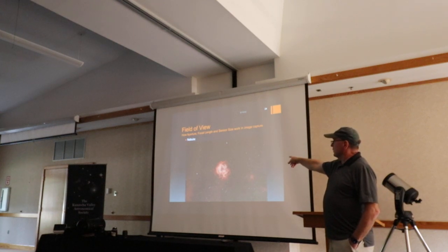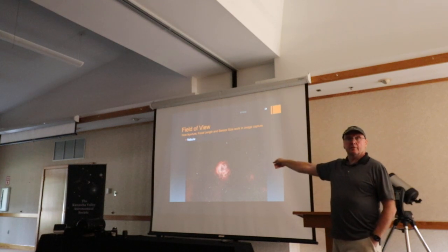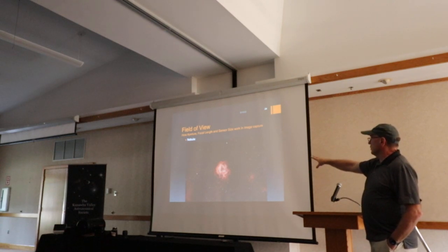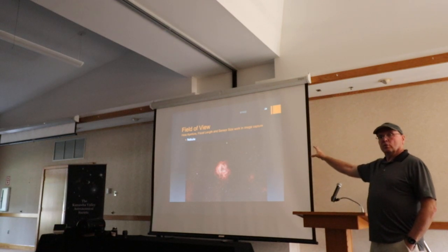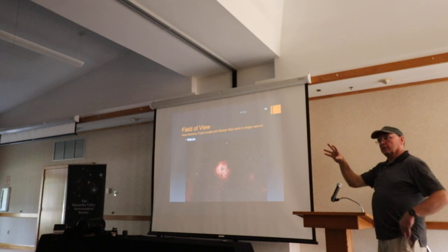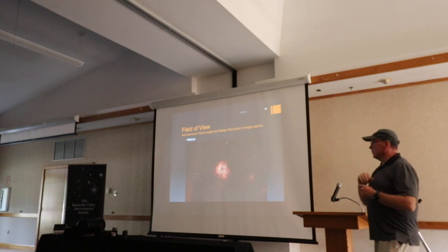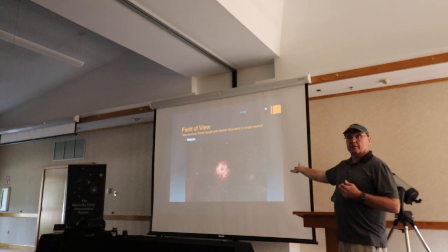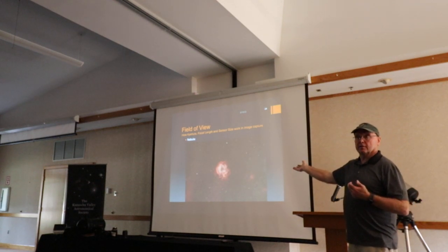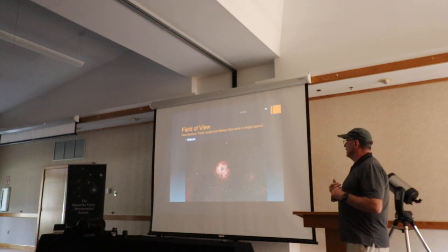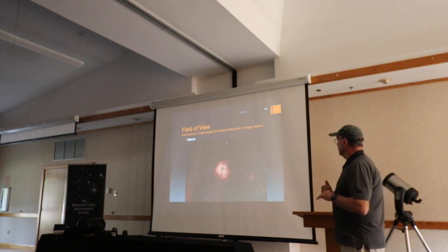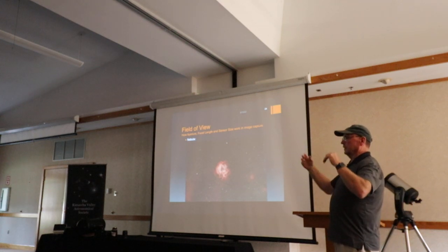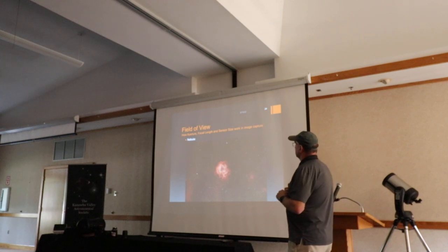Also in the winter time is the Rosette Nebula. If you look at it, it kind of looks like you're looking down on top of a rose. This was done with a 180 millimeter telephoto lens — nothing special in terms of big equipment needed to do these images.